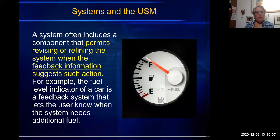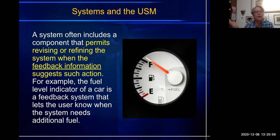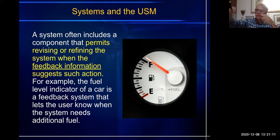Systems often include a component that permits revising or refining the system when feedback information suggests such an action. For example, the fuel level indicator of a car is a feedback system that lets the user know when the system needs additional fuel. But is it a closed or open system? And quickly on why scissors — they are made of component parts; they have a hinge; they are a system. Just the two pieces of scissor could cut something, but it's not going to cut accurately like scissors.